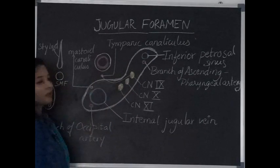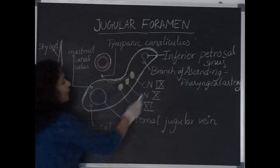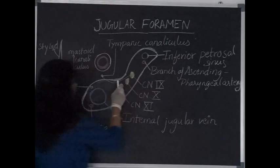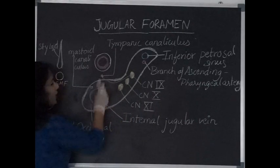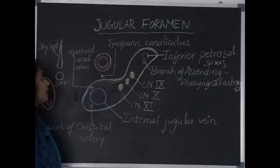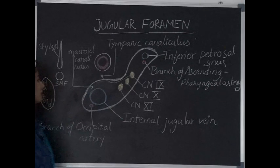And the ninth cranial nerve that is the glossopharyngeal nerve gives rise to a branch which is called as tympanic branch of glossopharyngeal to enter the ear and where it divides to form tympanic plexus.